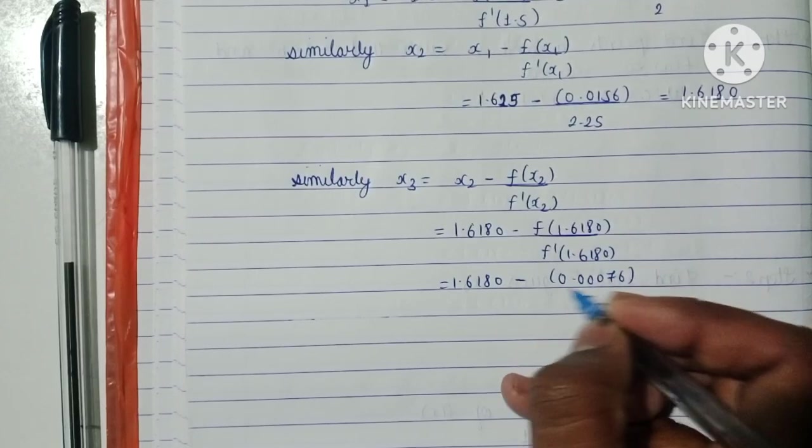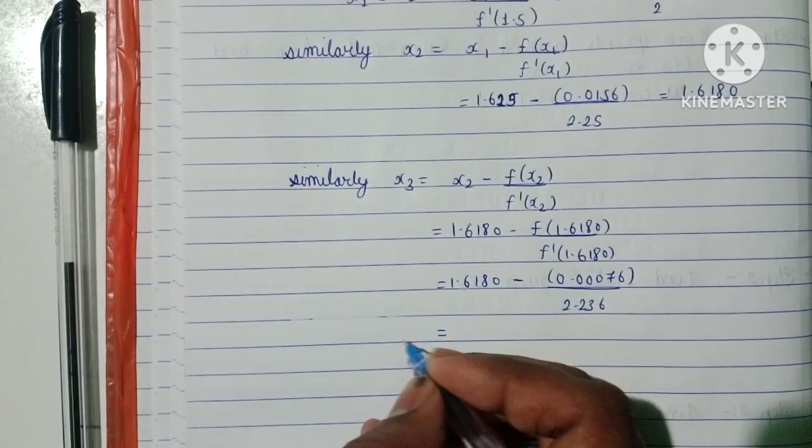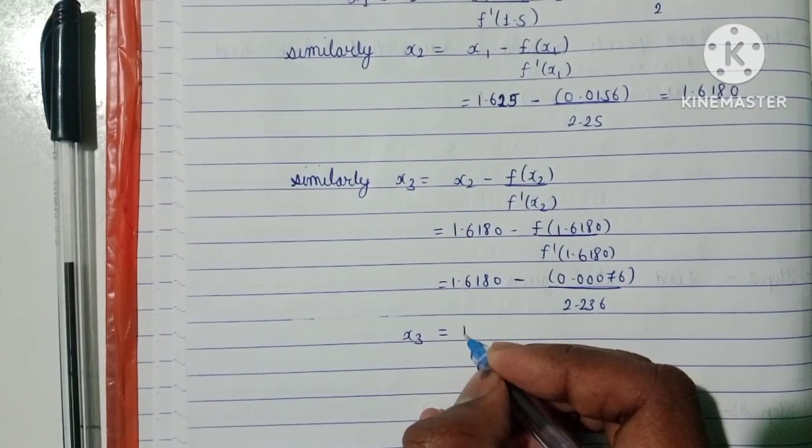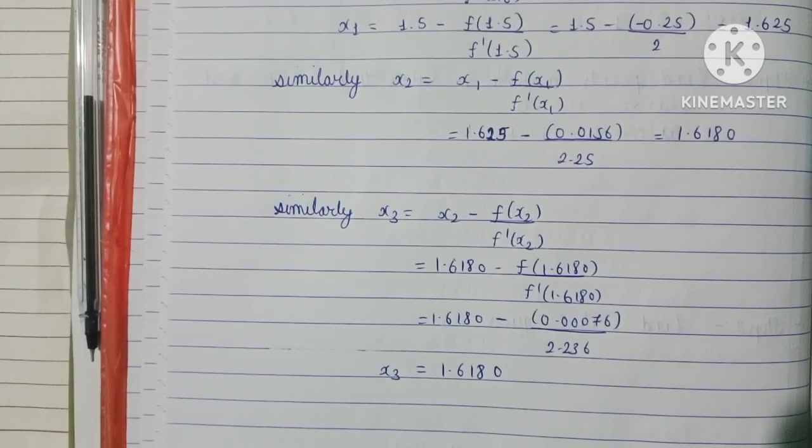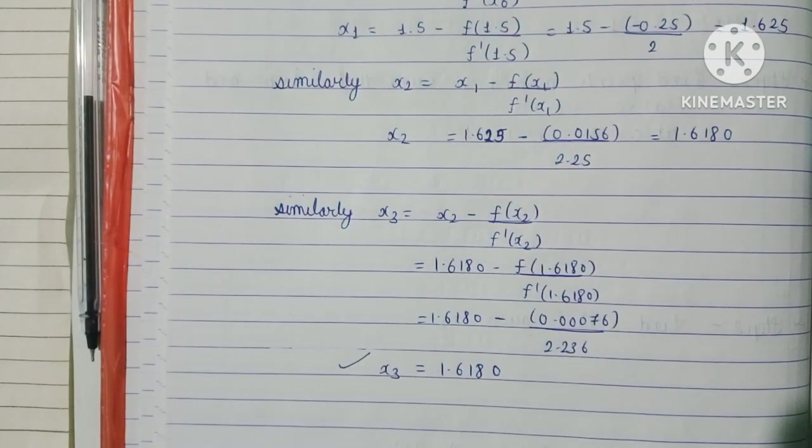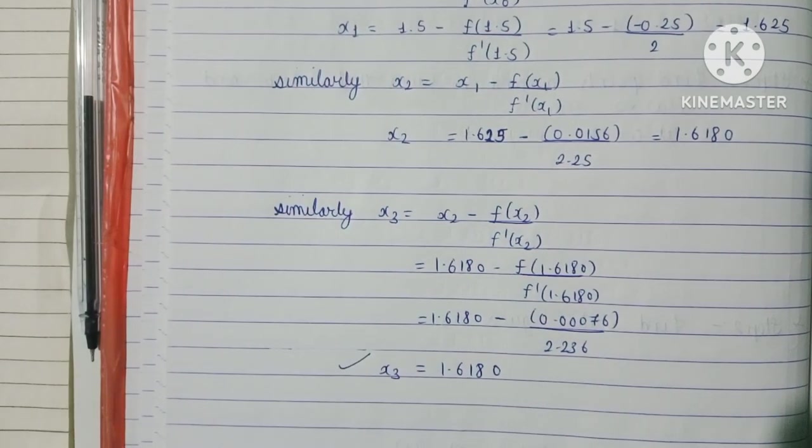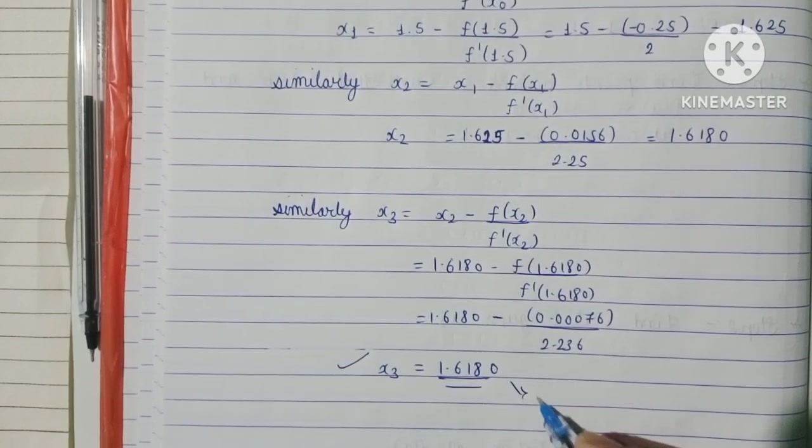Calculating: x₃ = 0.0156/2.236 = 1.6180. Since for four decimal places our last two approximations x₂ and x₃ are repeating, we can conclude that 1.6180 is our first root of x² - x - 1 = 0.